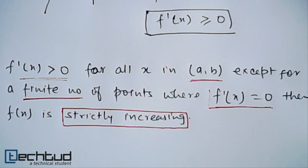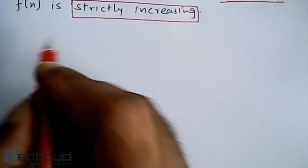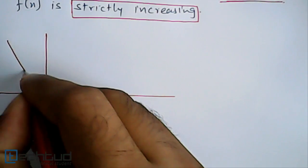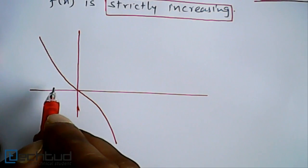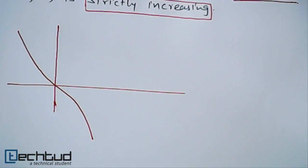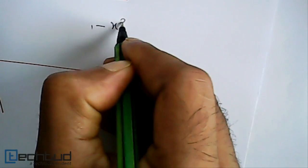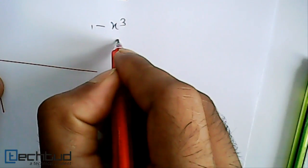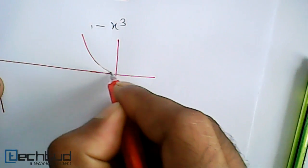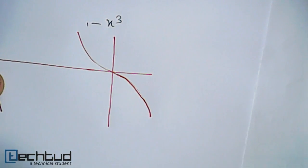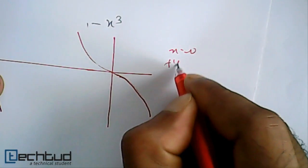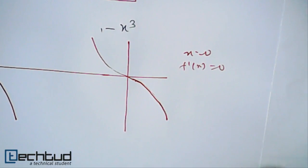Similarly for decreasing, if f'(x) is always less than 0 except at a finite number of points. Let's take another function: f(x) = -x³. We draw -x³ — it looks something like this. If you see, this is strictly decreasing, but at x = 0 it will have f'(x) = 0. So the same corollary applies for strictly decreasing as well.